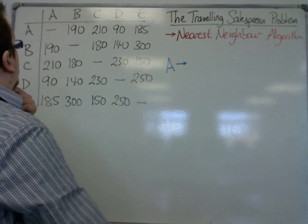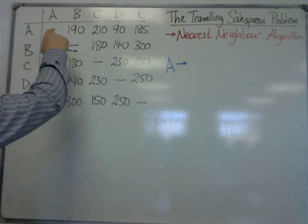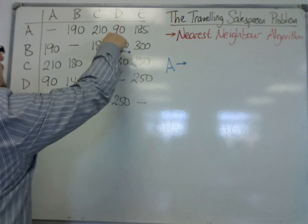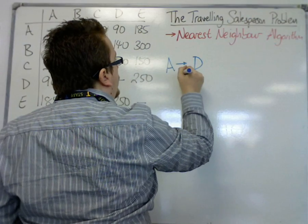So we're starting at A, and the shortest route out of A will be to D. So to D, we're going to go first.